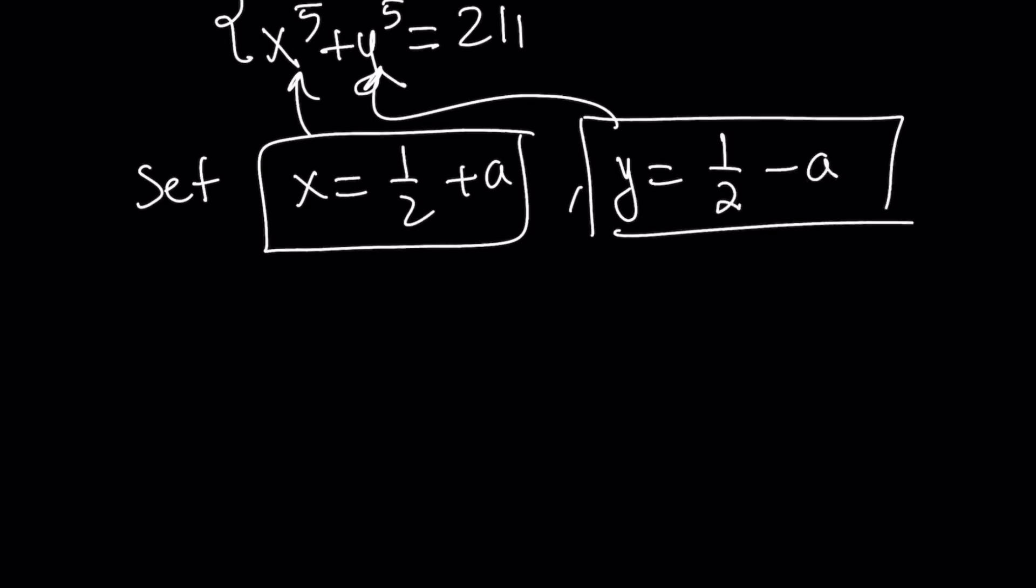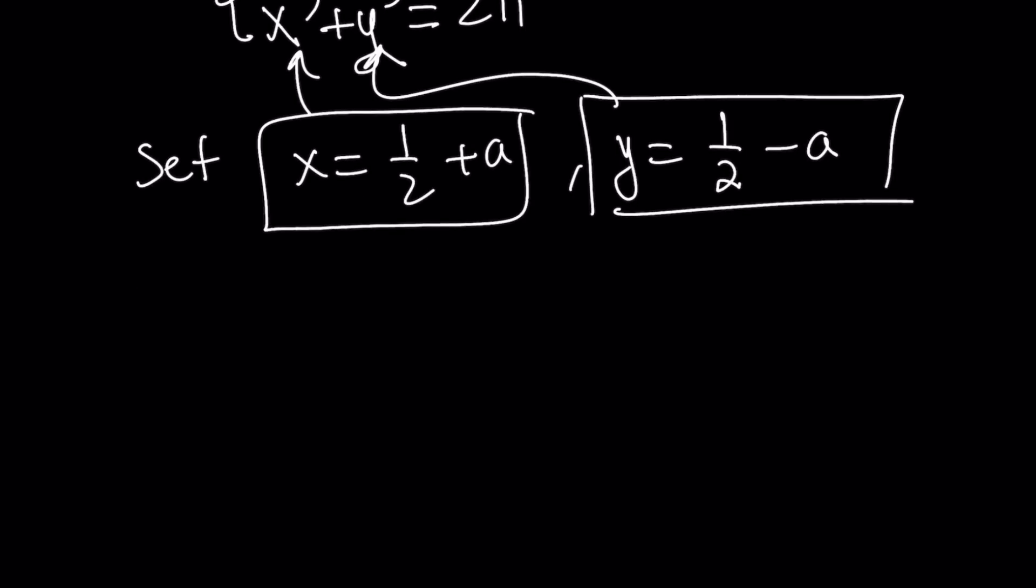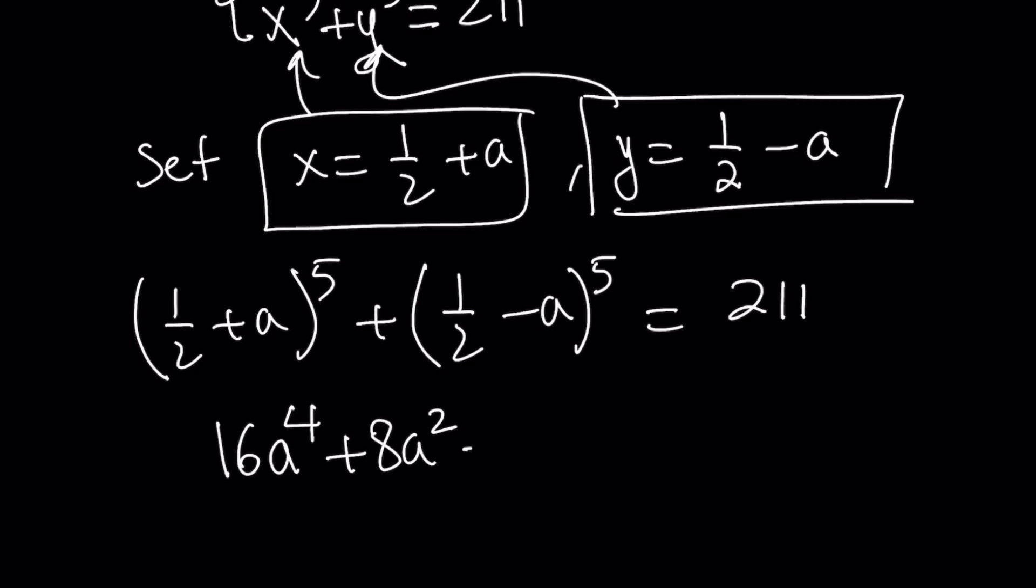Let's go ahead and do it. If you plug it in, we're going to get 1 half plus a, which is x to the 5th power, plus 1 half minus a, which is y, to the 5th power equals 211. If you expand this, take care of the fractions, divide, simplify, whatever, you're going to get the following equation: 16a to the 4th plus 8a squared minus 675 equals 0. So great.